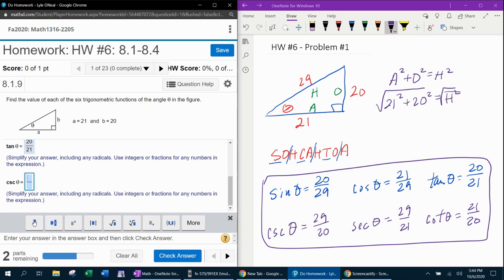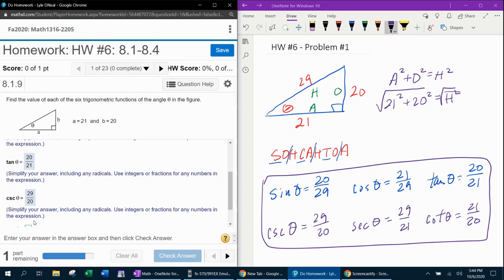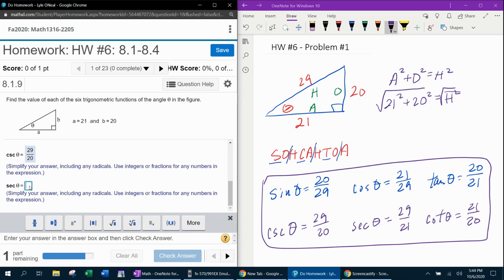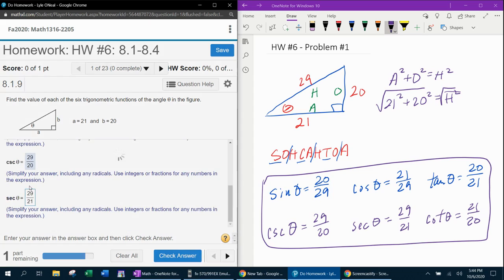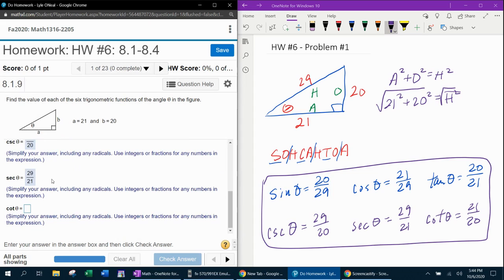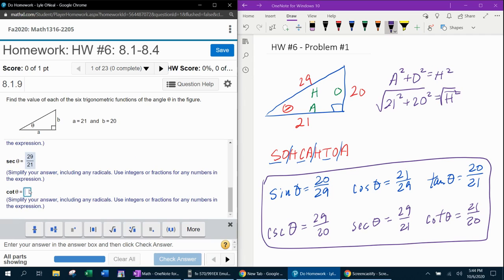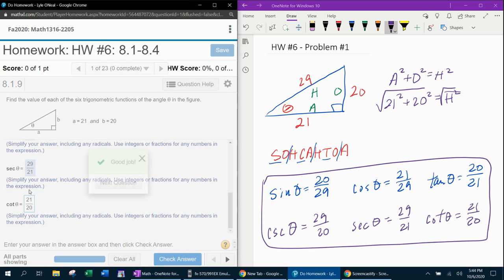Cosecant E is 29 over 21. Cosecant E is 29 over 20. And cotangent E is 21 over 21. 21 over 20. So there you go.